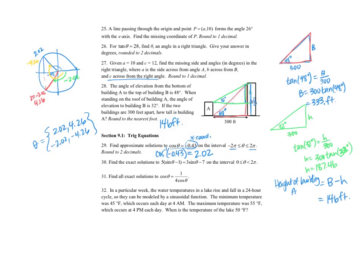I can see why there are four solutions on the interval from negative 2 pi to 2 pi. If I draw the graph of cosine and look at when the cosine value equals negative 0.43, that horizontal line hits the cosine curve in four places. Those four intersection points correspond to my four solutions on the unit circle.